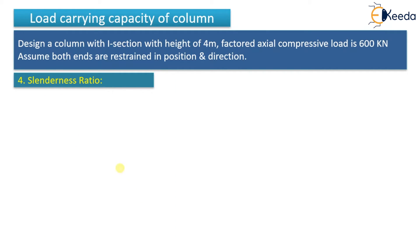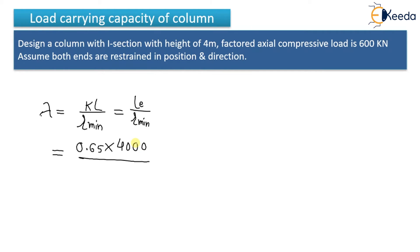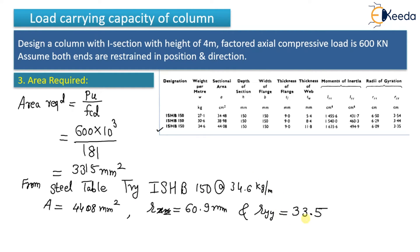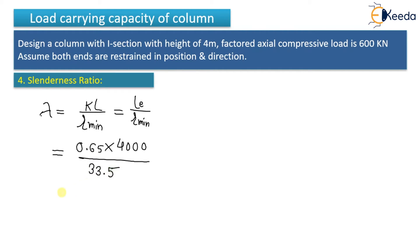Step four: calculate the actual slenderness ratio. Lambda = kL / r_minimum = effective length / r_yy = 2600 / 33.5 = 77.61.